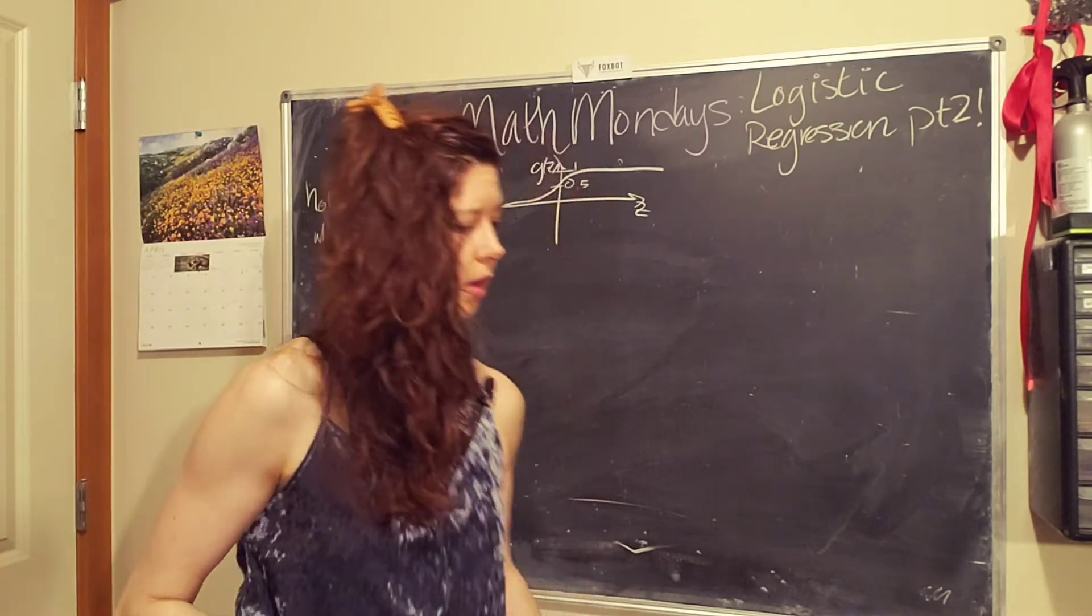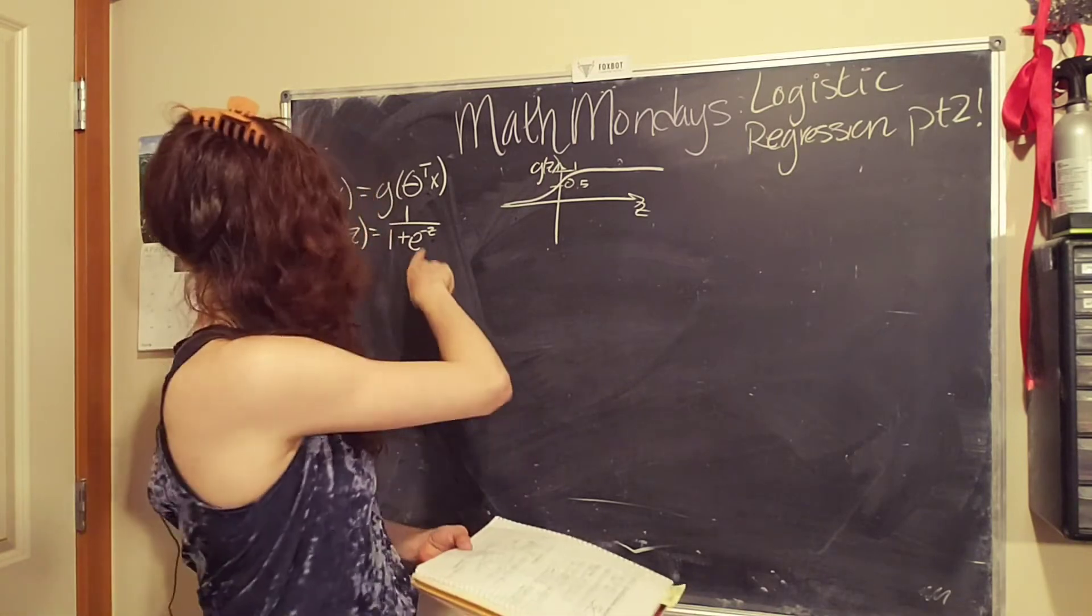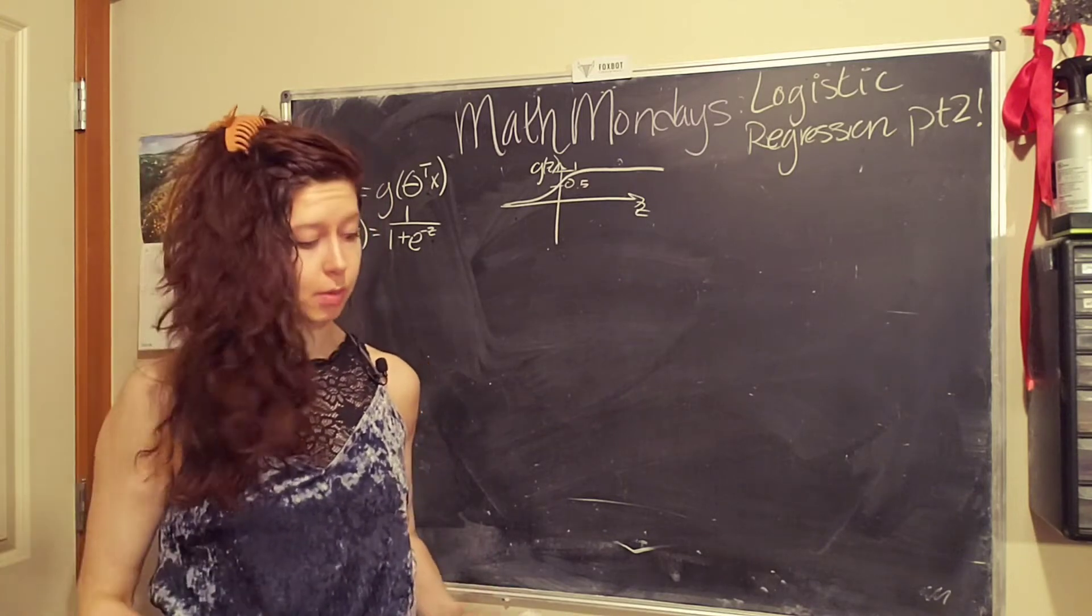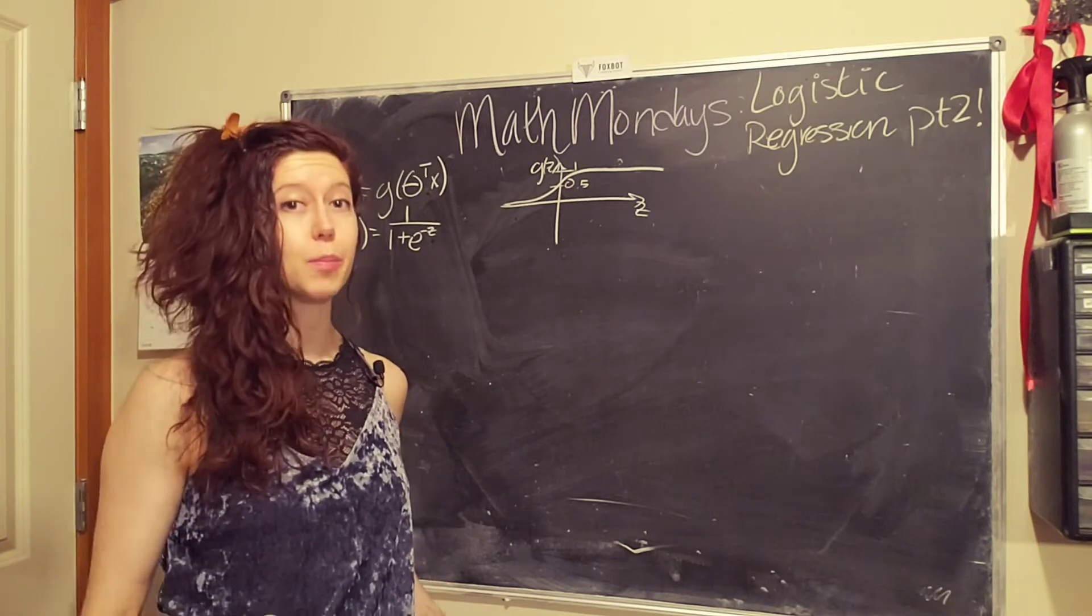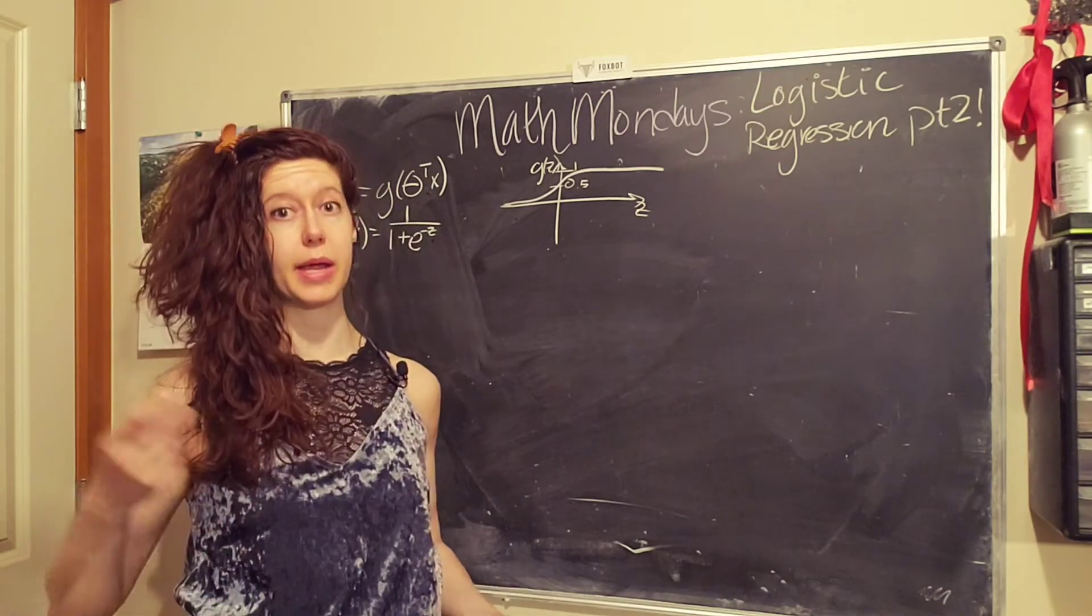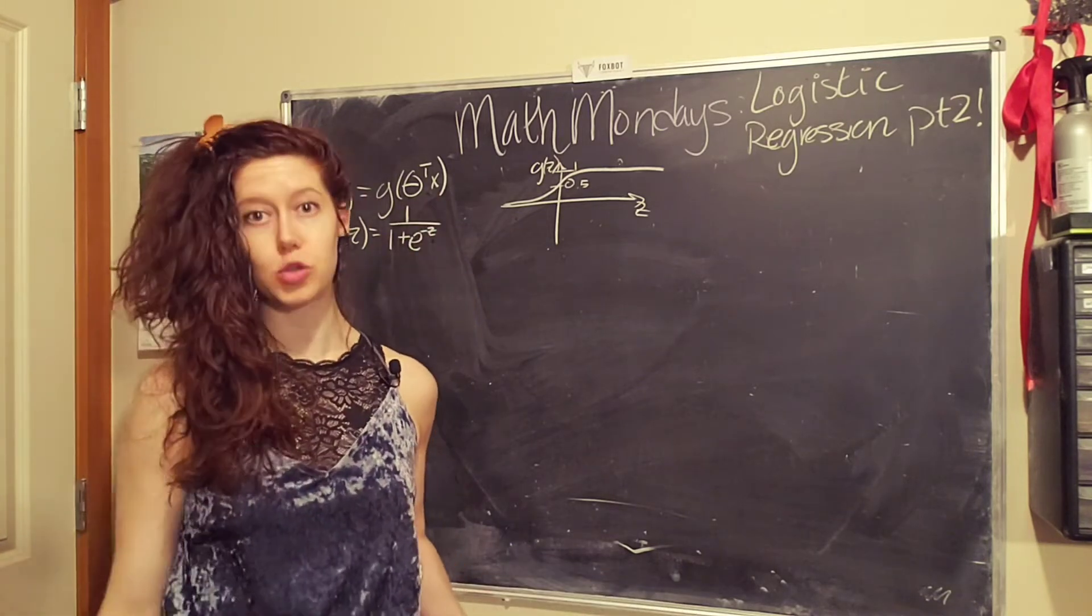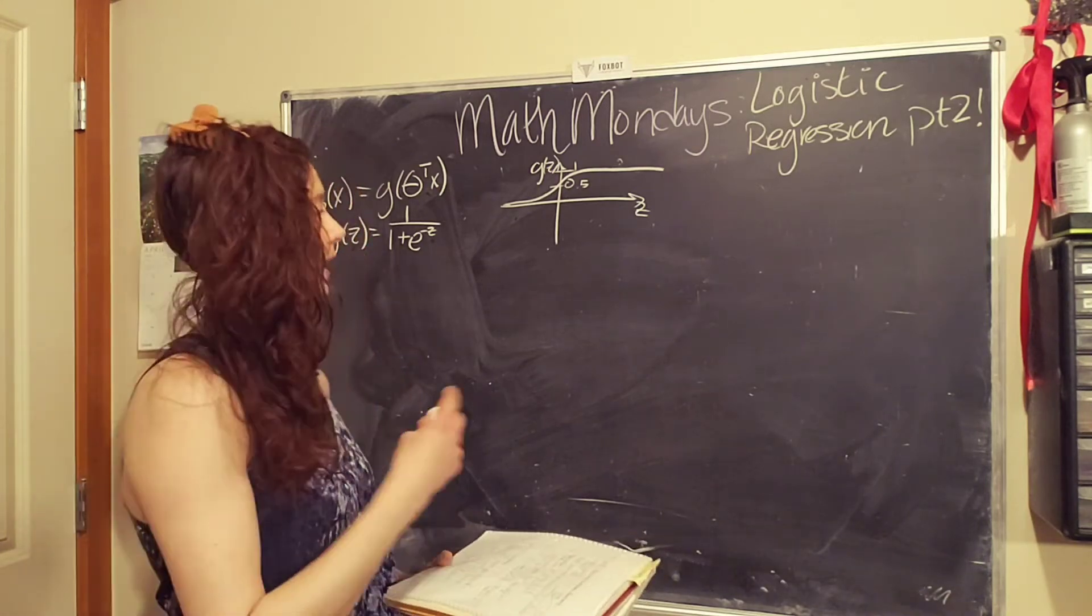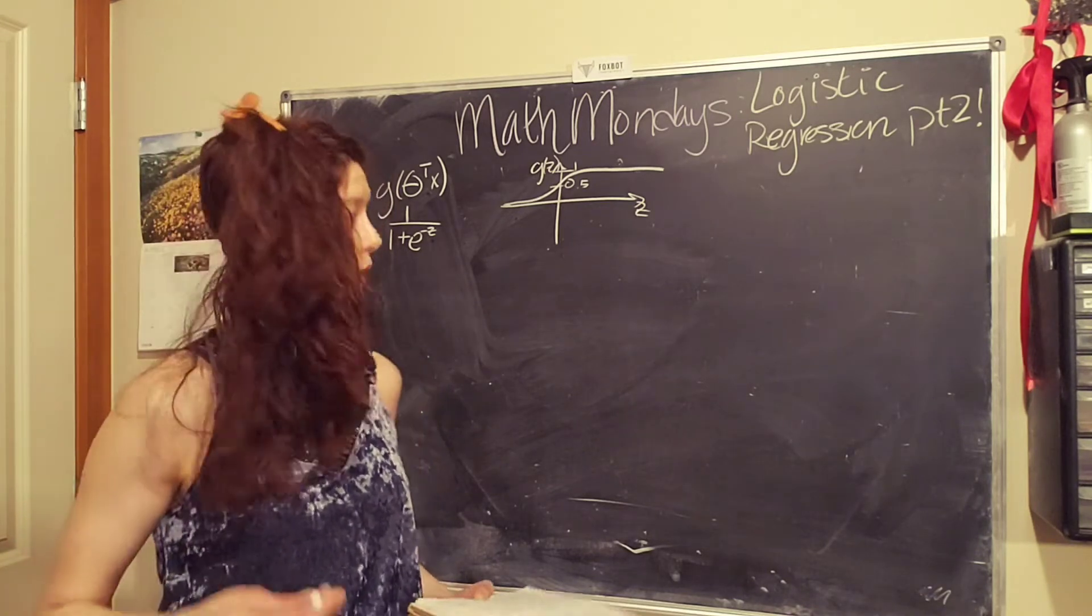So how do we read this? Well, our hypothesis function is going to spit out a value, because of the sigmoid function, between zero and one. So we interpret this as the probability that y equals one given a particular input value x. So remember our parameters are set by the training data, and our variable x, or our vector variable x, is what is going to change with new data. And so h of x is going to give us a value between zero and one, which we translate as a probability.